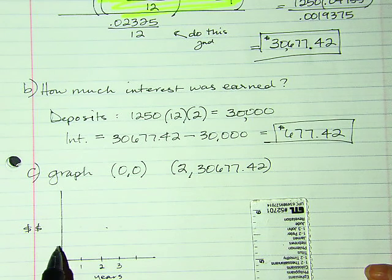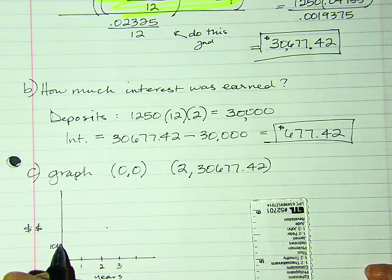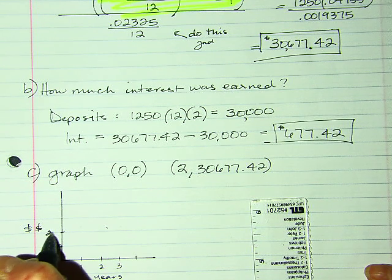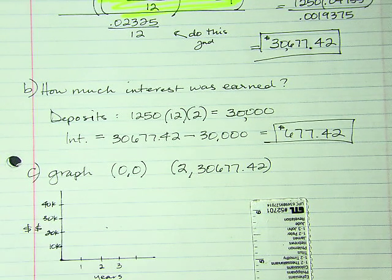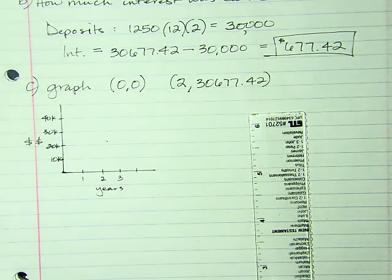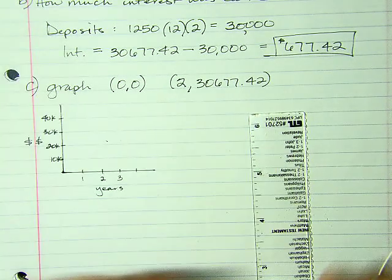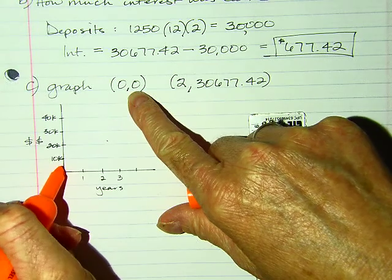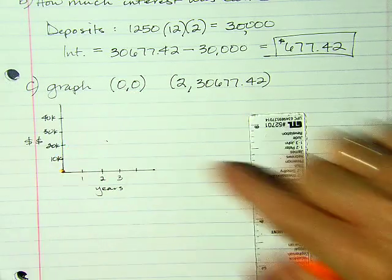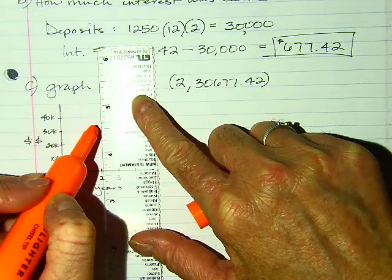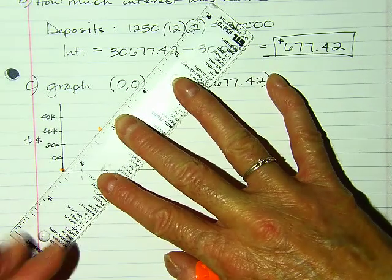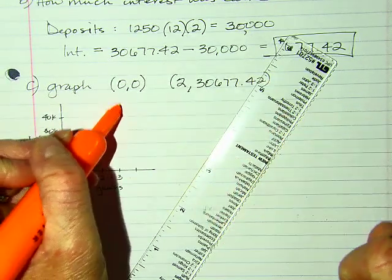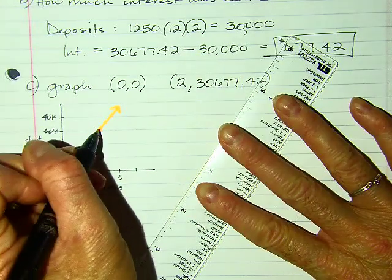The y-axis is dollars. Since this is almost $40,000, I'll mark 10K, 20K, 30K, so 40K at the top. K stands for $1,000. I have a point at (0, 0), and then at two years she had a little over $30,000, so I'll put her right there and graph it.